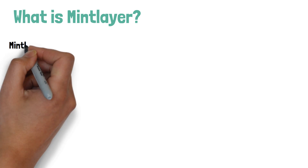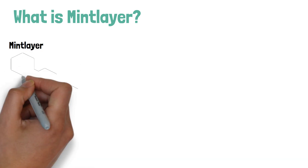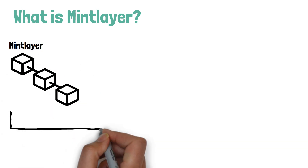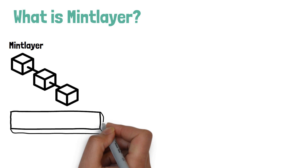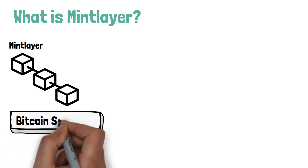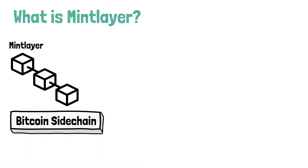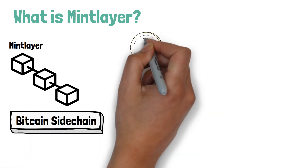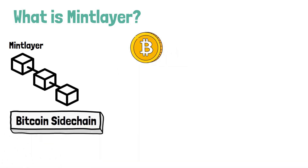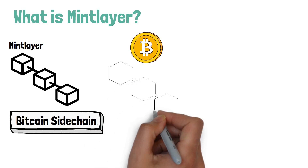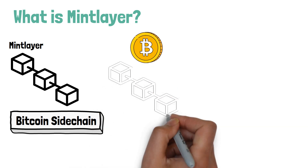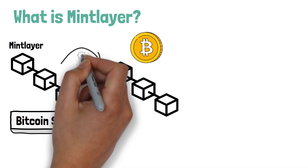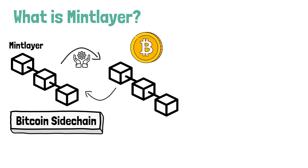In this video we want to explain what MintLayer is. MintLayer is a sidechain to the Bitcoin blockchain. A sidechain essentially helps a pre-existing blockchain, in this case Bitcoin, to scale and to become more interoperable.